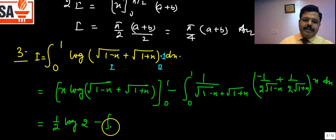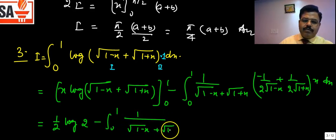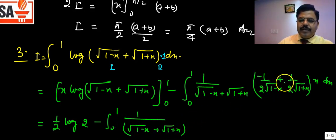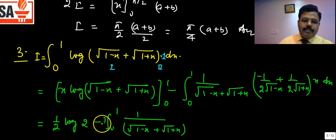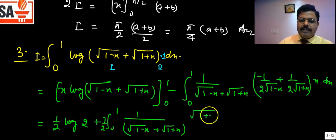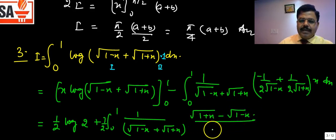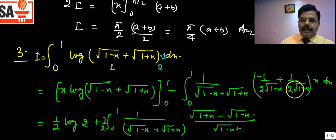For the remaining integral from 0 to 1, we have the expression (1/(√(1−x) + √(1+x))) multiplied by (1/(2√(1−x)))·(−1) + (1/(2√(1+x))), all times x dx. Taking LCM and rationalizing by multiplying numerator and denominator by the conjugate (√(1+x) − √(1−x)).